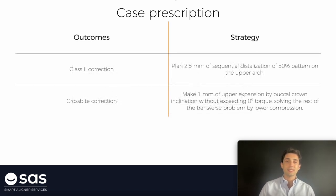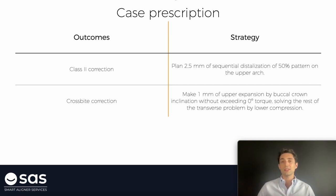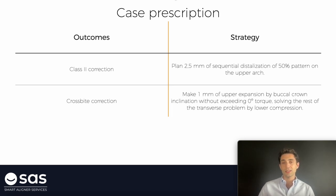Here I'm going to show you some examples of case prescriptions. We have some outcomes. For example, when we have class 2 correction, we are going to write the strategy to solve this class 2 correction. We can solve this class 2 problem with sequential distalization of 2.5 mm, applying a 50% pattern on the upper arch. I am explaining to the technician the millimeters of distalization, the way to distalize, and where I want this distalization.